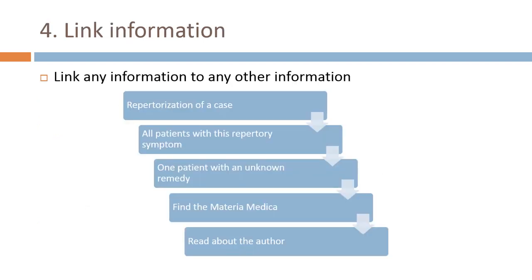A fourth idea is to link information — any type of information can be linked in any other way. For example, once you repertorize a case and ask whether you have any other patients with this symptom, you go to your patient file and retrieve all patients where you ever used that repertory symptom in an analysis. Then you see the remedies you prescribed, find an unknown remedy, switch to the linked Materia Medica to find it, read about the author, contact them, or go to their website. With linking information in all these directions and levels, we follow the thinking of a homeopath.